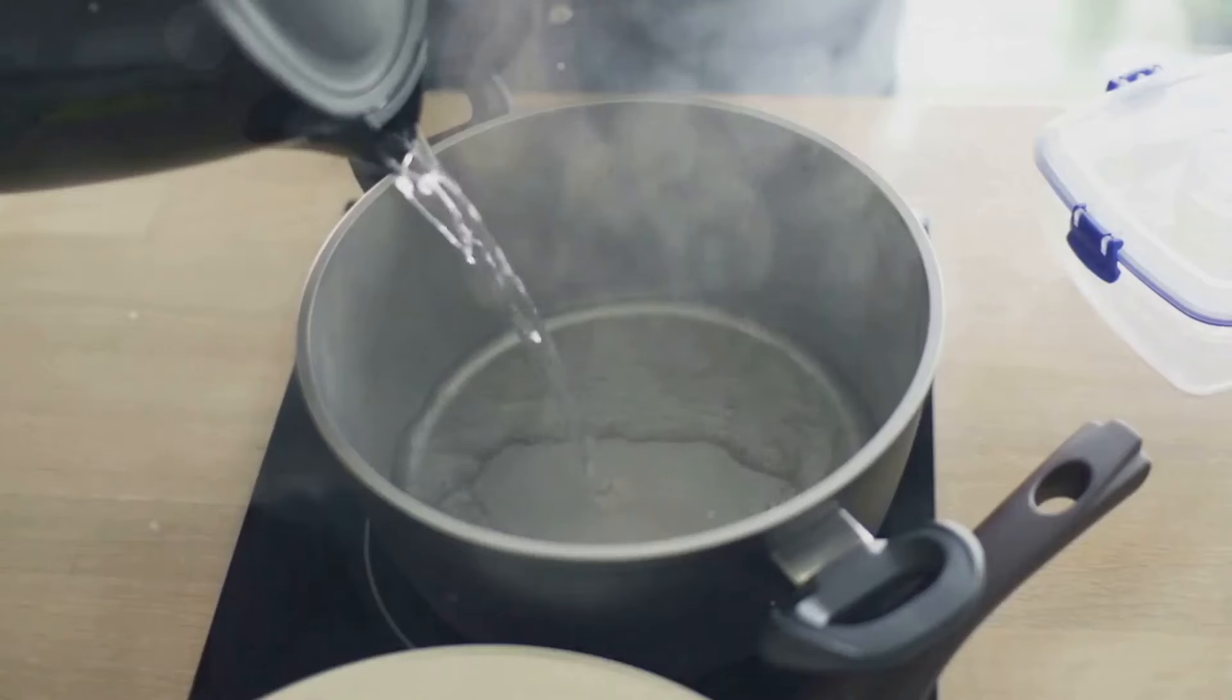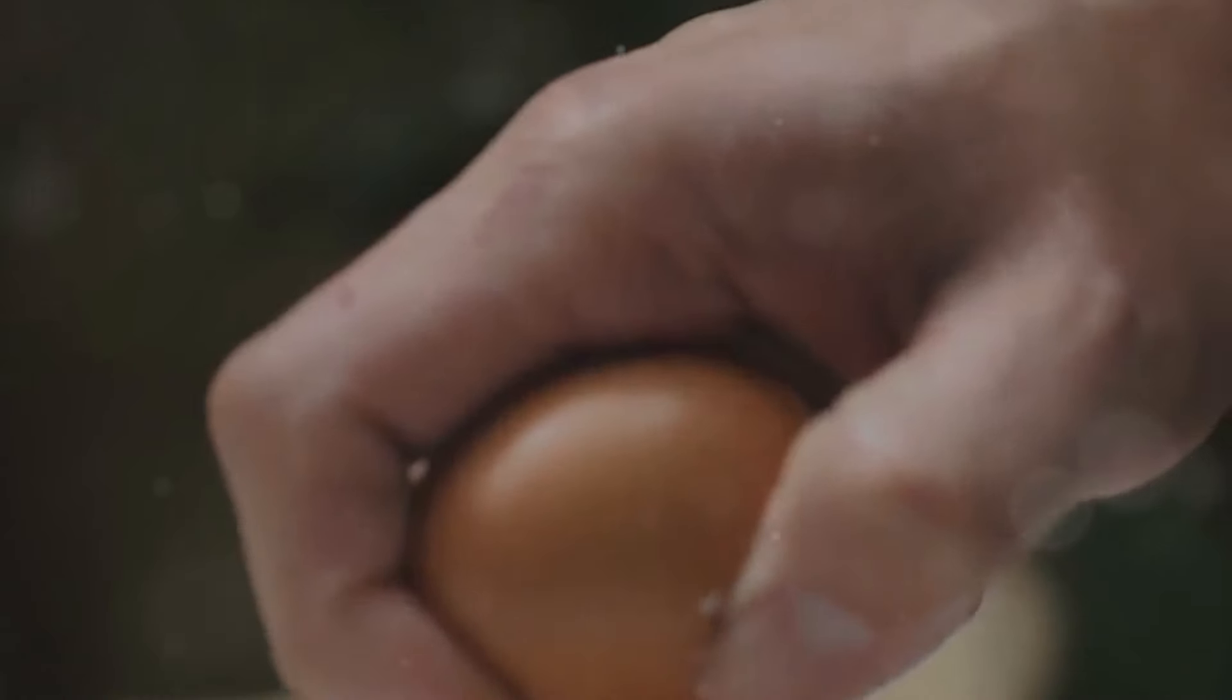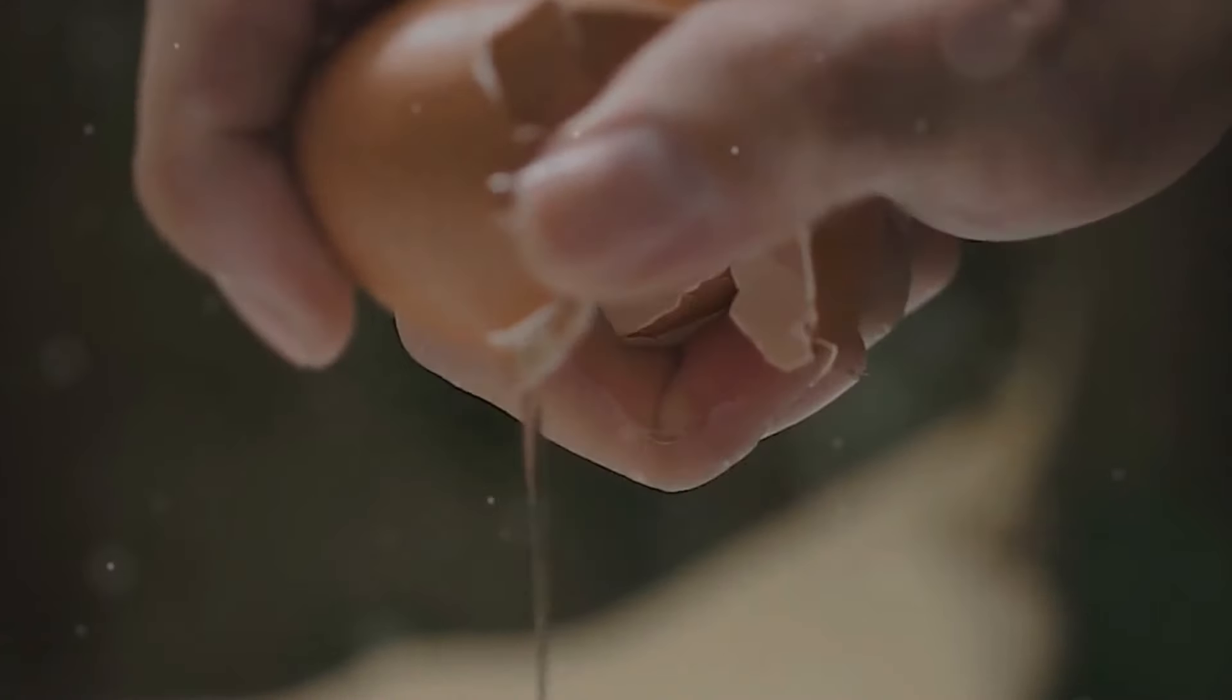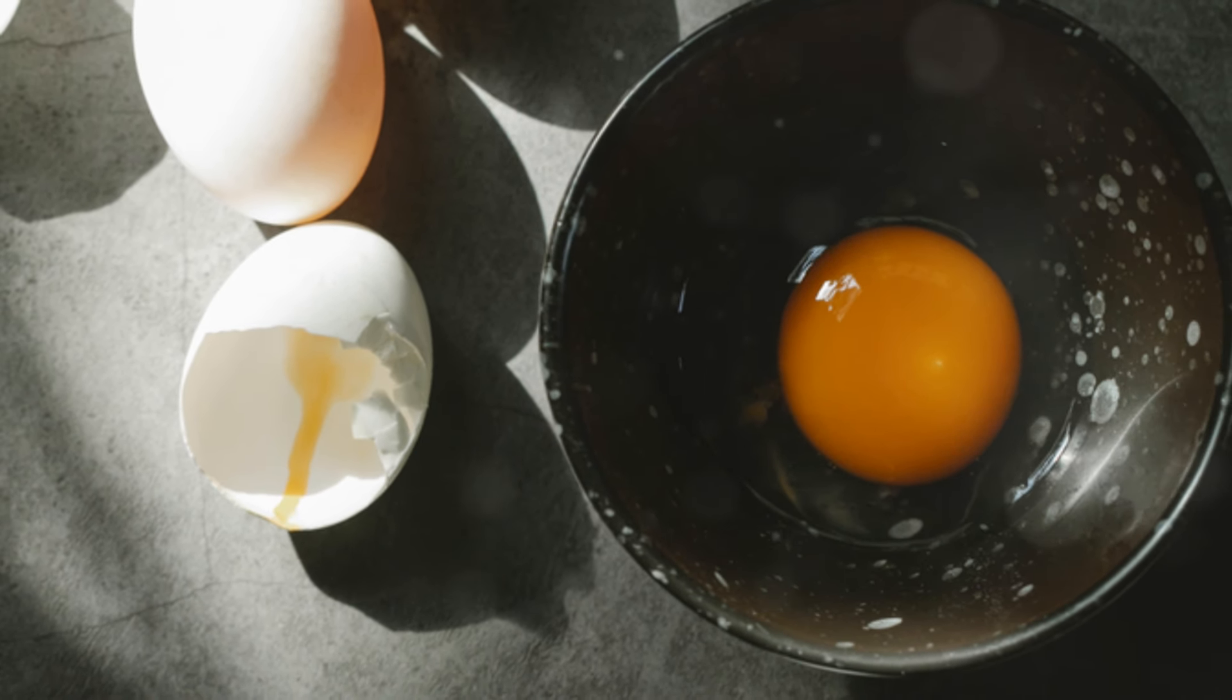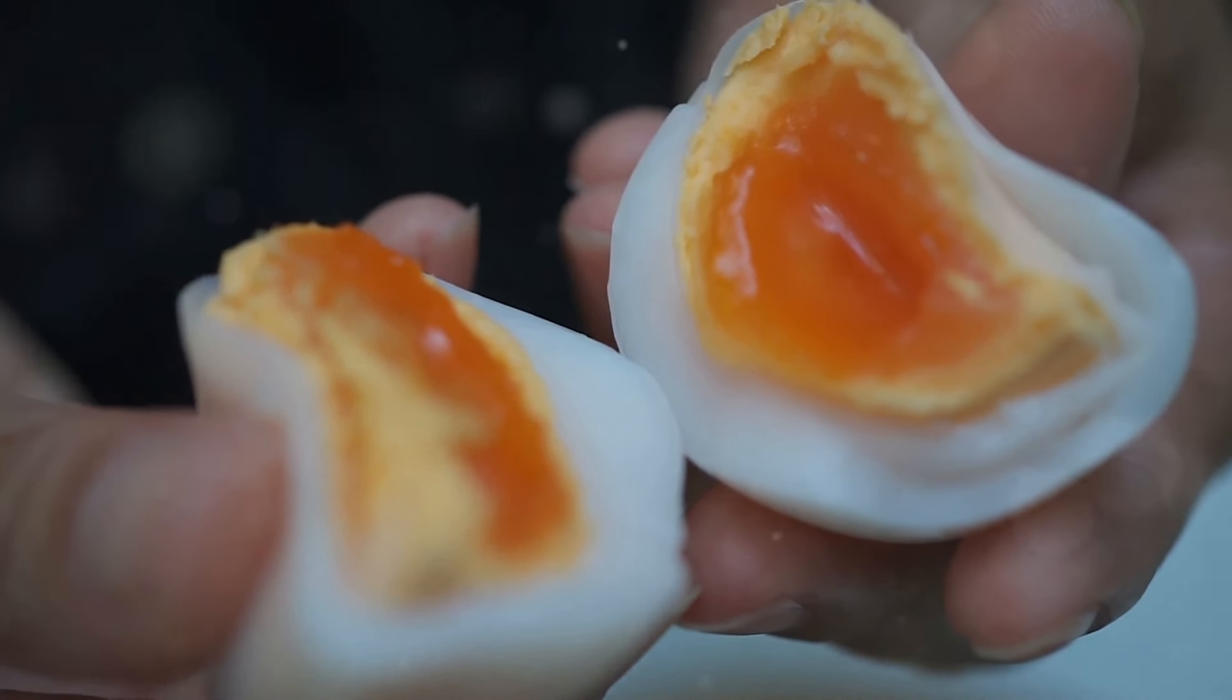How do you prevent eggs from cracking while boiling? Adding a pinch of salt and gently lowering the eggs into the water can help prevent cracking. Is it safe to eat eggs with cracks after boiling? Yes, but they might not look as appealing and the texture can be affected.